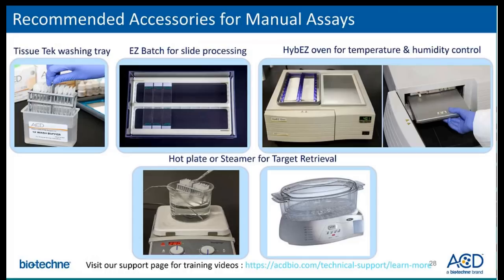Presented here are some recommended accessories required for running the manual RNAscope and BaseScope assays. For washing and handling slides, you may use either the TissueTec wash tray or our EasyBatch slide processing system, which was designed to streamline RNAscope and BaseScope assays and save handling time when working with a large number of samples. The HybEZ hybridization system is designed to maintain optimal temperature and humidity to ensure consistent staining. Our website has training videos on the different steps of the manual assay, which is a great visual guide.